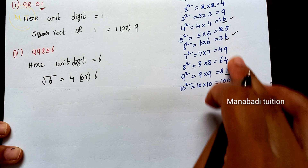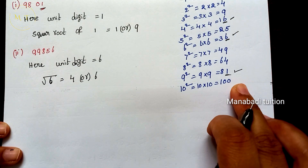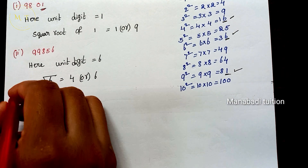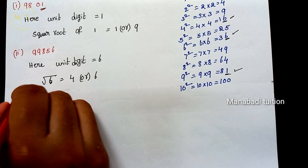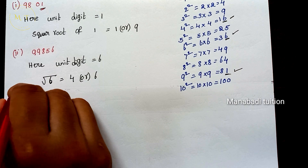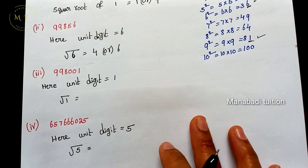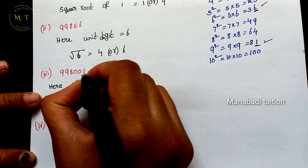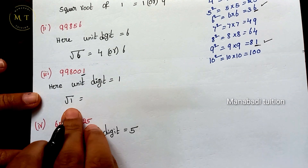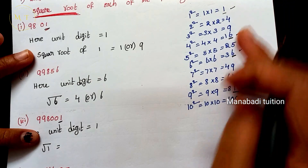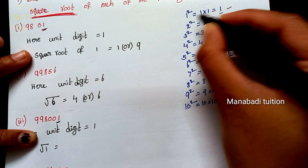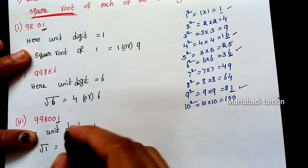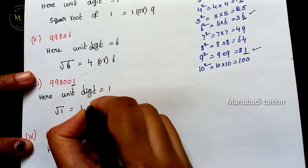The third number has unit digit 1. Since 1 squared ends in 1 and 9 squared also ends in 1, the possible unit digits of the square root are 1 or 9.